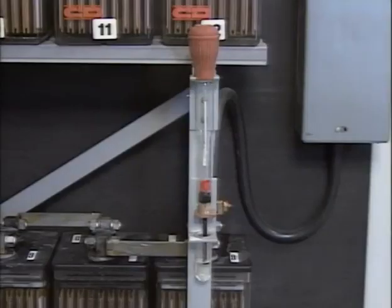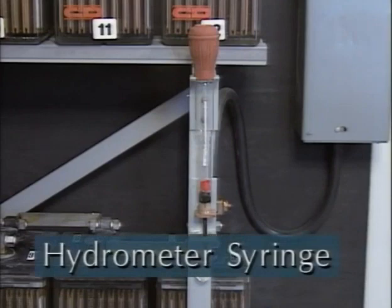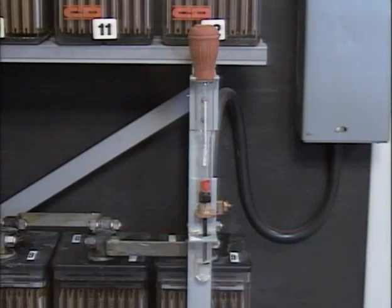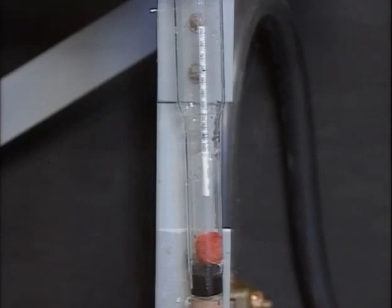Specific gravity is measured using an instrument called a hydrometer syringe. Most hydrometer syringes have the same basic parts. At one end is a rubber nozzle that's inserted into the cell. At the other end is a rubber squeeze bulb for drawing electrolyte into the body of the hydrometer. The body is a glass barrel.